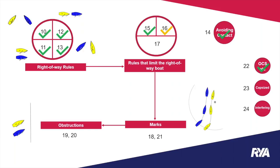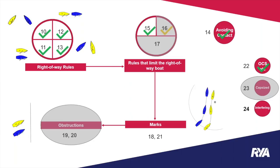Over the previous two episodes, in episode one Chris covered the right-of-way rules — rules 10 through to 13. In episode two, Matt introduced rules that limit what the right-of-way boat can do, covering rule 15 and part of rule 16. Tonight we'll further expand on rule 16, covering the second part, then rule 17, then obstructions with rules 19 and 20, and briefly touch on rule 23.